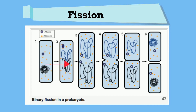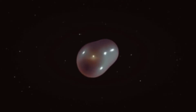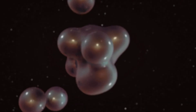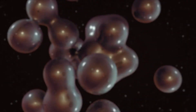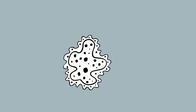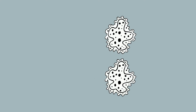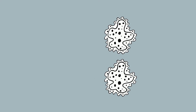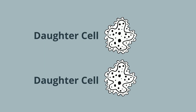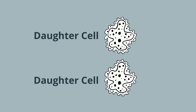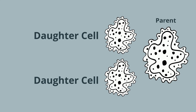Fission occurs in lower plants and bacteria, also in algae and protozoa. In this process, the cell divides after the DNA has divided. If the cell divides into two, it is called binary fission. The DNA or the nucleus of the mature cell divides first, and then the cell divides into two daughter cells of almost the same size.